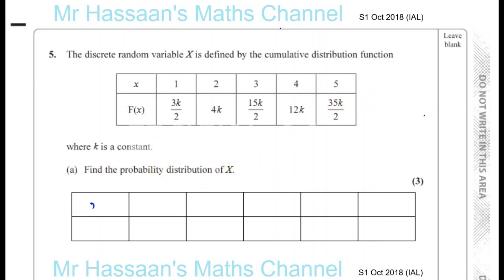Basically what we're going to do, we're going to have x and we're going to have the probability that x is equal to x. And we've got 1, 2, 3, 4 and 5 as we have up there. But what's going to happen, this is going to be the same as 3k over 2. But this 4k is the sum of these 2, and this 15k is the sum of these 3, and this 12k is the sum of these 4, and this 35k over 2 is the sum of these 5. And these all add up to 1, that means 35k over 2 must equal 1. So that means k is equal to 2 over 35.